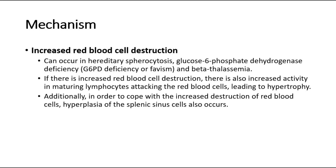For the mechanism of increased red blood cell destruction, this can occur in hereditary spherocytosis, G6PD deficiency, and beta thalassemia. If there is increased red blood cell destruction, there is also increased activity in maturing lymphocytes attacking the red blood cells, leading to hypertrophy. Additionally, in order to cope with the increased destruction of red blood cells, hyperplasia of the splenic sinus cells also occurs.